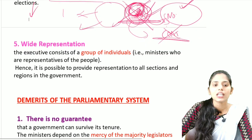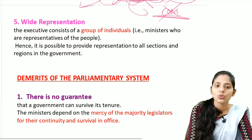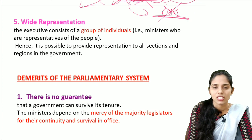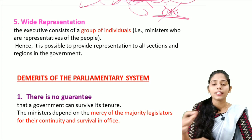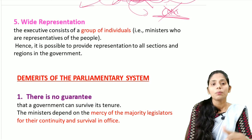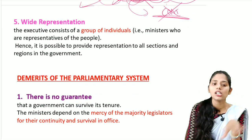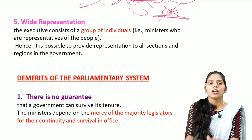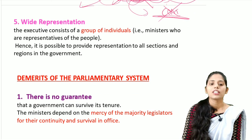The next merit is wide representation. The executive contains a group of individuals — the ministers — who are representatives of the people, so it is possible to provide representation to all sections and regions in the government.